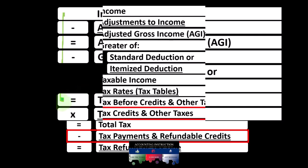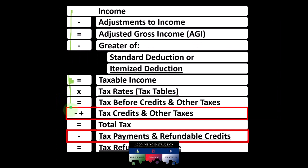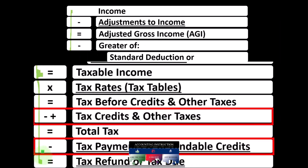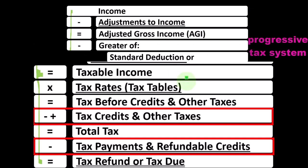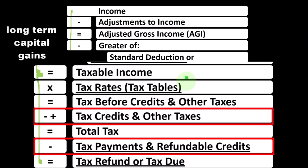But it's only half the battle. We still have the second half of the income tax formula. Once we have taxable income, we have to apply the tax — you would think by multiplying by a rate, but it's more complex than that because we have the progressive tax system, and some types of income are at other tax rates, such as long-term capital gains or qualified dividends.